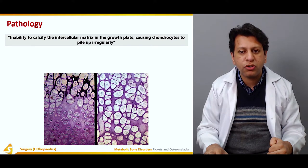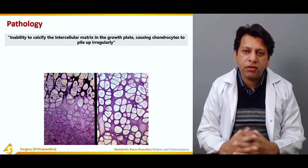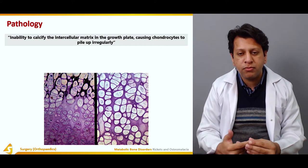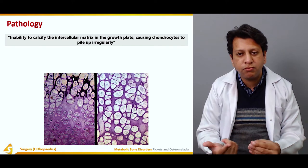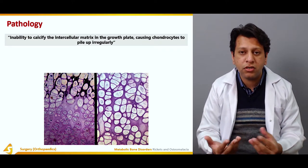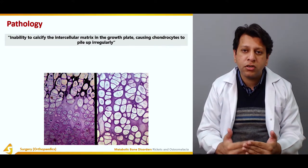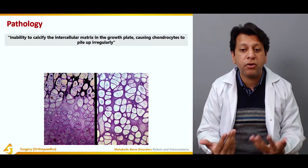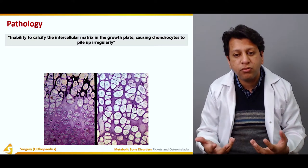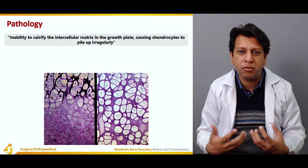Histopathologically, there is inability to calcify the intercellular matrix in the growth plate, causing chondrocytes to pile up irregularly. The growth plate has five zones: replication, proliferation, maturation, degeneration, and calcification. The maturation-degeneration-calcification zones are termed the hypertrophic zone. Without enough calcium, cells in this zone become enlarged.